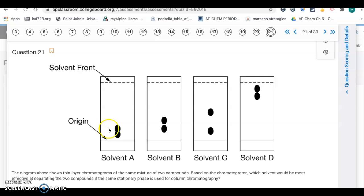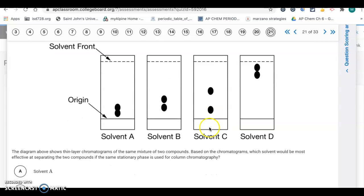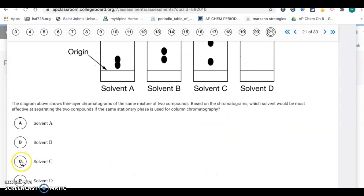These are chromatograms, paper chromatography. We see the different solvents being used. We have these thin layer chromatograms with the same mixture of two compounds. Based on the chromatograms, which solvent would be most effective at separating the two compounds? It only shows that solvent C is where we're getting a significant separation between those two. So that's what we want to have. Letter C.